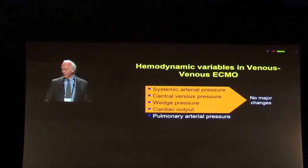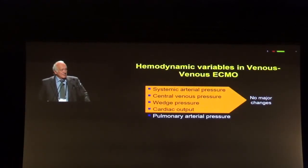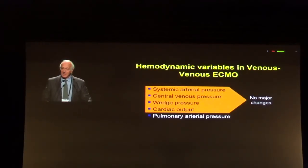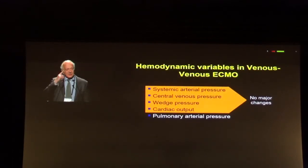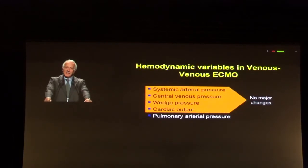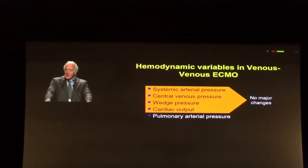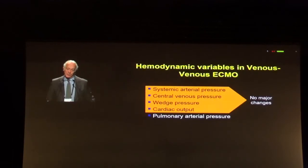Now let's go to hemodynamic monitoring. Veno-Venous ECMO does not directly affect systemic arterial pressure, does not directly affect central venous pressure. Indirectly it might — cardiac output is affected only insofar as it relieves hypoxemia and the hypoxemic hyperdynamic status. What ECMO changes directly, and this is worse than unsuspected, is pulmonary arterial pressure and right ventricular function.